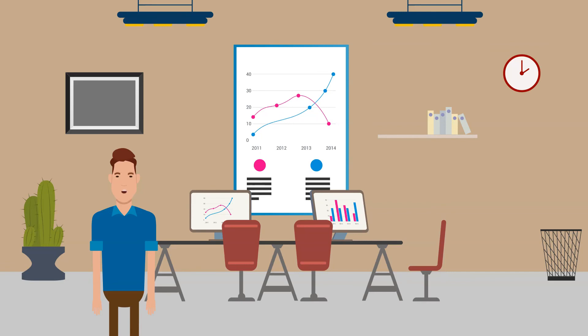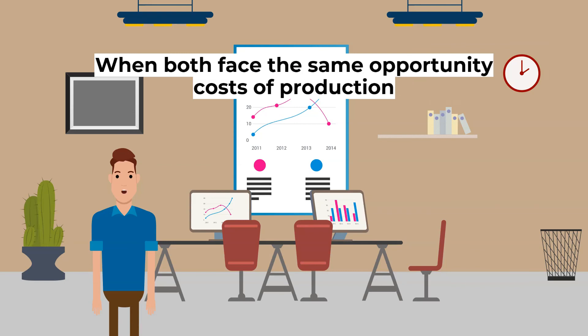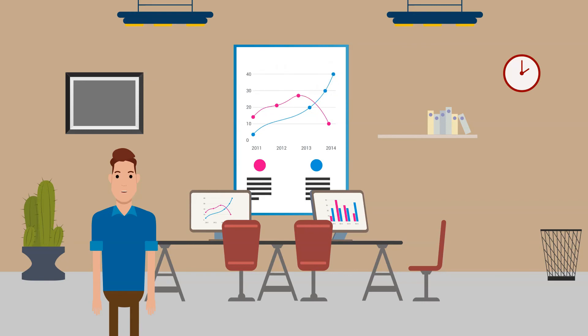There is one case in which countries are not better off trading: when both face the same opportunity costs of production. This doesn't mean both countries have the same production function — one could still be more productive — but neither has a comparative advantage over the other. In this case, specialization and trade will result in exactly the same level of consumption as producing all goods domestically.